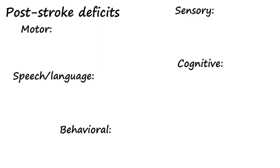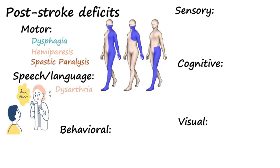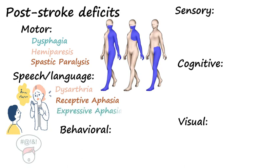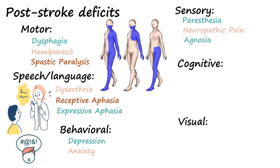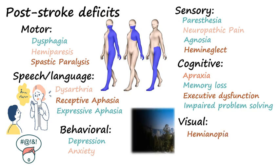Post-stroke deficits include motor, speech, language, behavioral, sensory, cognitive, and visual defects. These involve the following: dysphasia, hemiparesis, spastic paralysis, dysarthria, receptive aphasia, expressive aphasia, depression, anxiety, paresthesia, neuropathic pain, agnosia, hemi-neglect, apraxia, memory loss, executive dysfunction, impaired problem solving, hemorrhagia, and monocular blindness.